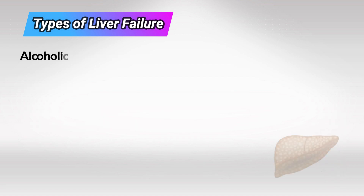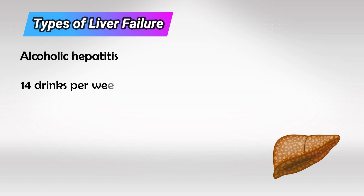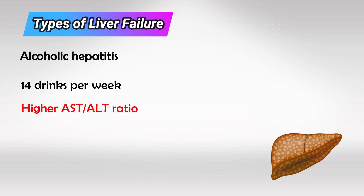The third type is alcoholic hepatitis. This occurs in patients who drink more than 14 drinks a week. There is a classic increase in the AST to ALT ratio — the more they drink, the higher the ratio and the more symptoms they'll have.